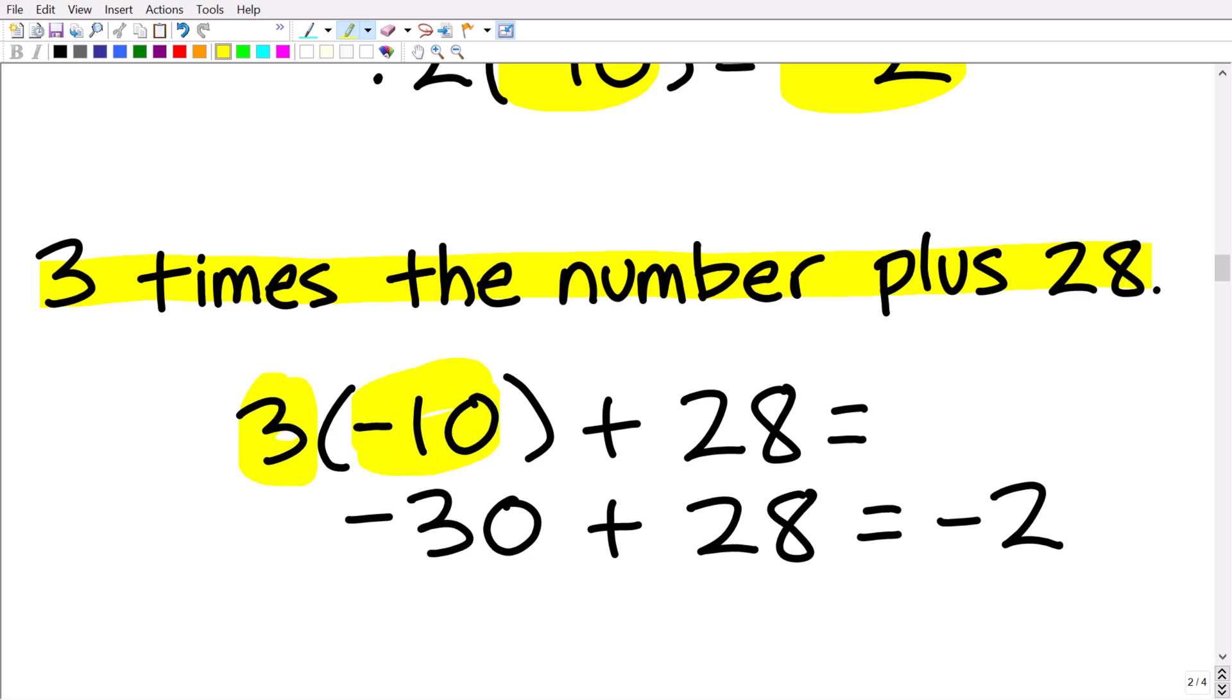So 3 times this number, or negative 10, is what? Well, that is negative 30 plus 28 is what? Well, negative 30 plus 28 is indeed negative 2. So this all works out. So indeed, negative 10 is our final solution.